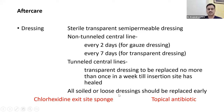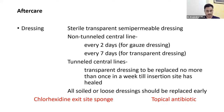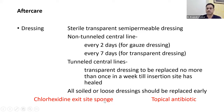Chlorhexidine exit-site sponges have shown some benefit in preventing central line-associated bloodstream infection, but recent studies show the incidence of infection or catheter colonization — CLABSI — is similar whether or not chlorhexidine exit-site sponges are used. Topical antibiotics are also questionable and not routinely advocated. After placing the central line, the catheter tip position must be confirmed — the best way is a chest X-ray, which also allows visualization of tube position and can pick up early complications like pneumothorax or hemorrhage. Femoral venous lines do not routinely require X-ray confirmation.